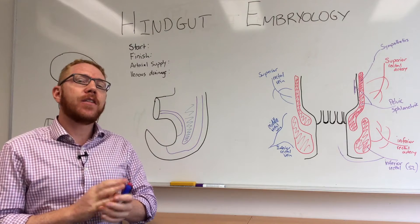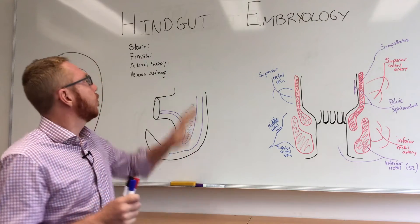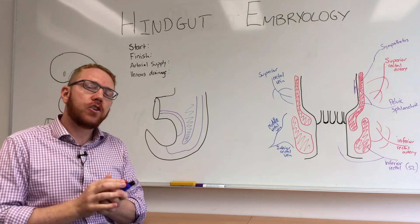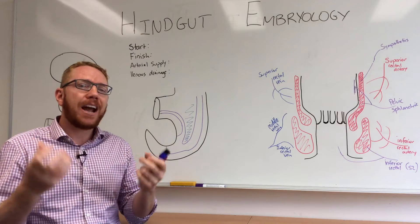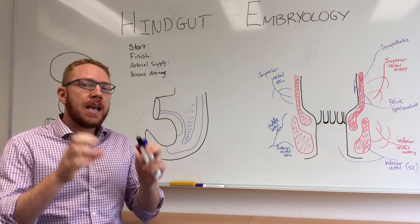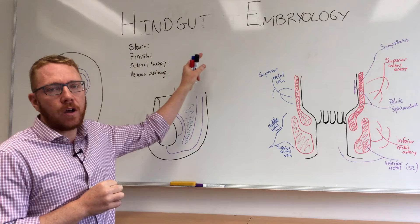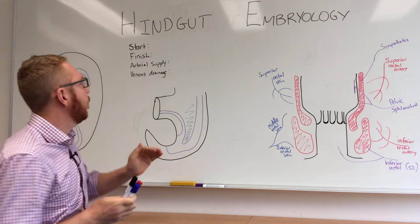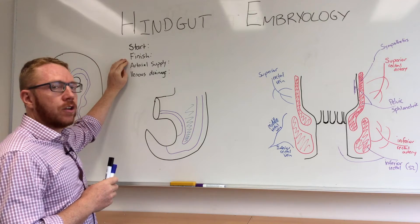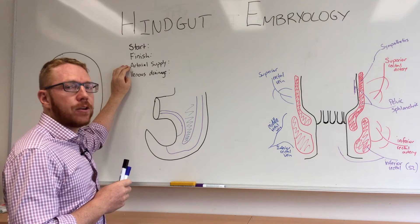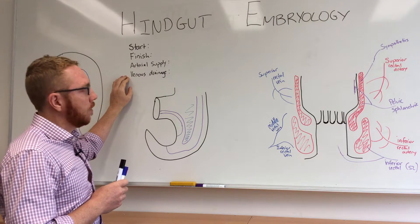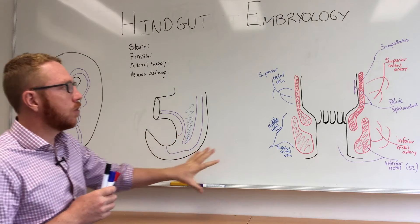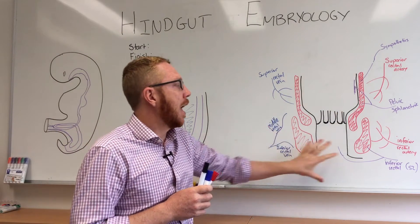Welcome to this last lecture on gut embryology. This session will focus on the hindgut. We've already gone through the foregut and midgut and all associated structures, so if you haven't seen those two videos, look at those first. For today's session we're going to focus on just the hindgut, the distal part of the gut tube. Key takeaways: where it starts, where it finishes, arterial supply, and venous drainage.